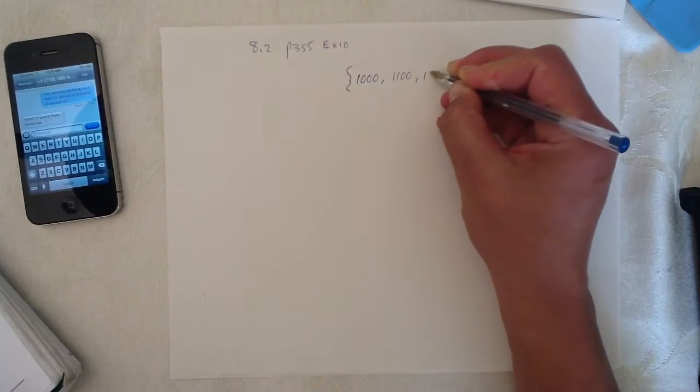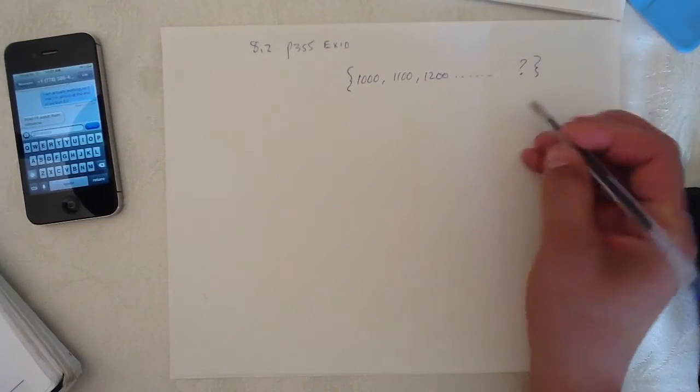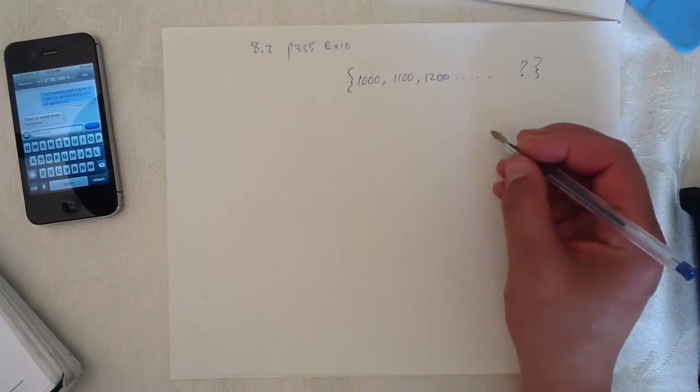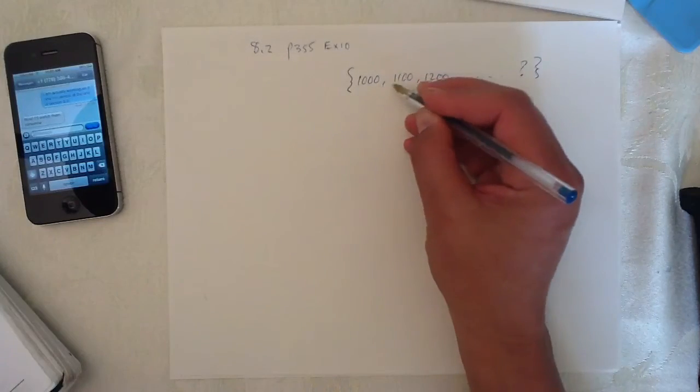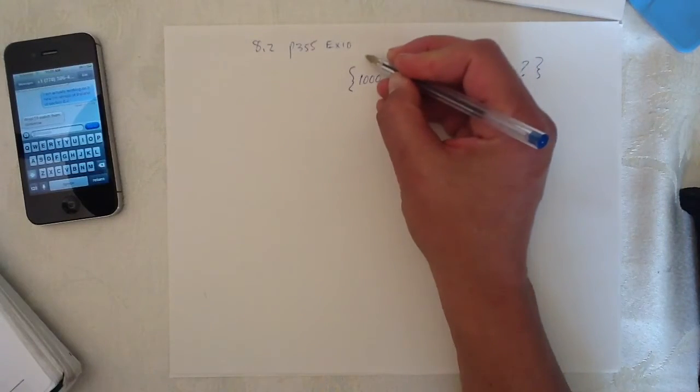The series looks something like this. It goes on and on and on until we don't know where. And we want to find the sum of that series. And we don't quite have enough information to do that yet. We do know that D is a hundred. There's a hundred between each of these, which is good stuff.